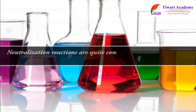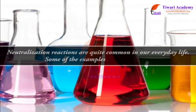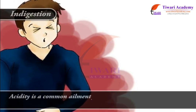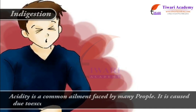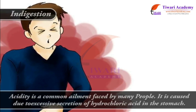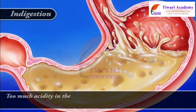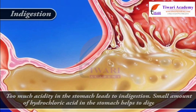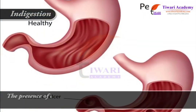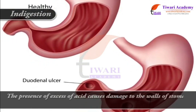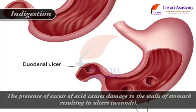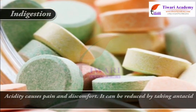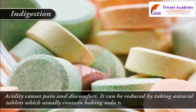Indigestion: acidity is a common ailment faced by many people. It is caused due to excessive secretion of hydrochloric acid in the stomach. Too much acidity leads to indigestion. A small amount of hydrochloric acid in the stomach helps to digest food, but excess acid causes damage to the walls of the stomach, resulting in ulcers and wounds. Acidity causes pain and discomfort and can be reduced by taking antacid tablets, which usually contain baking soda to neutralize the excess acid.